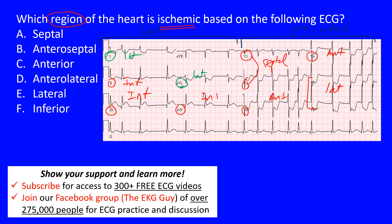So the inferior leads are II, III, and AVF. Lead I and AVL are the lateral limb leads. In the precordial leads, V1 and V2 are the septal leads; V2 to V4, often V3 to V4, are the anterior leads; and then the lateral leads are V5 and V6.